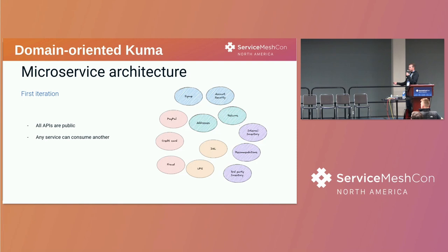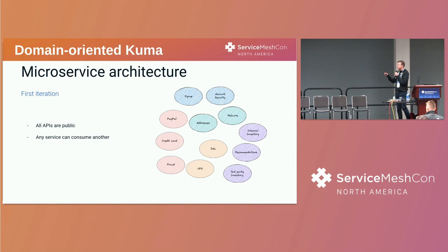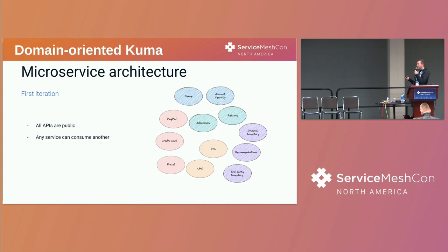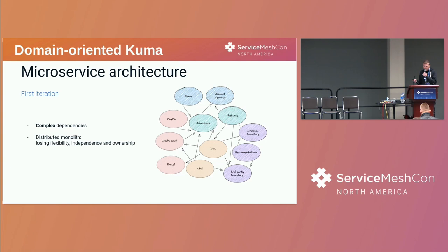If we take a generic store as an example, and we want to do it using microservices, the most naive way is just to implement our functionality as microservices and have a flat network of microservices. Every service exposes some functionality in its API, and this API is public — meaning any other service in the mesh can use it. And as we scale up to more and more microservices, there are some disadvantages to this architecture.